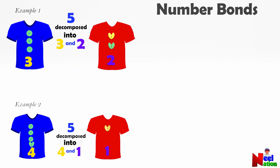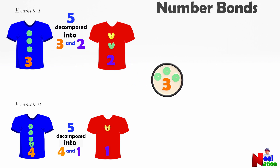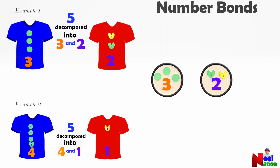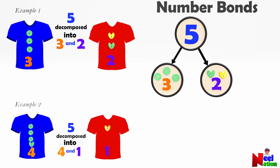Let's move on to making number bonds. Number bonds show how numbers are split or combined. Let's build a number bond for five. How many buttons are on the blue shirt? Three — you are right! Let's put that in a circle. How many buttons are on the red shirt? Two! Let's put that in another circle.